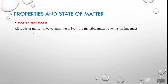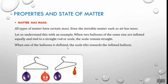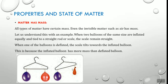Next: matter has a mass. All types of matter have a certain mass, even invisible matter such as air. When two balloons of the same size are inflated equally and tied to a straight rod, the rod remains straight. But when one balloon is deflated, the rod tilts towards the inflated balloon — because the inflated balloon has more mass than the deflated one. From this activity we can say matter has mass, even if the matter is invisible.